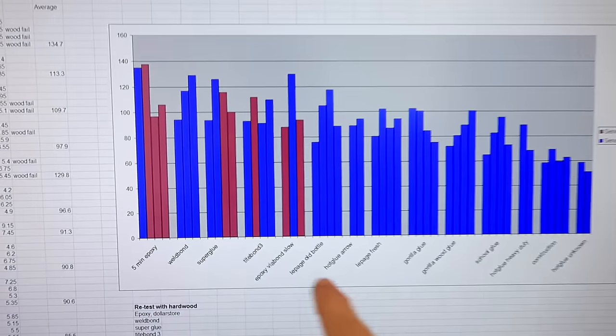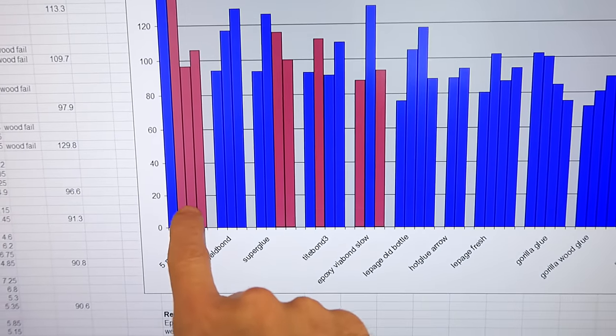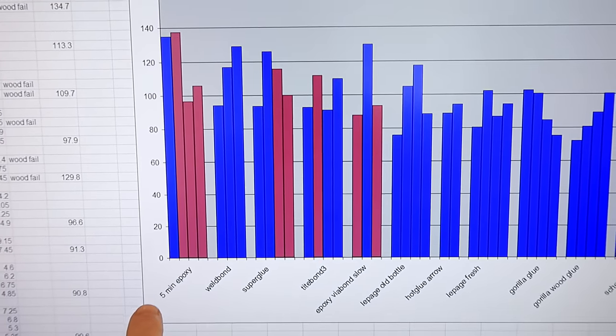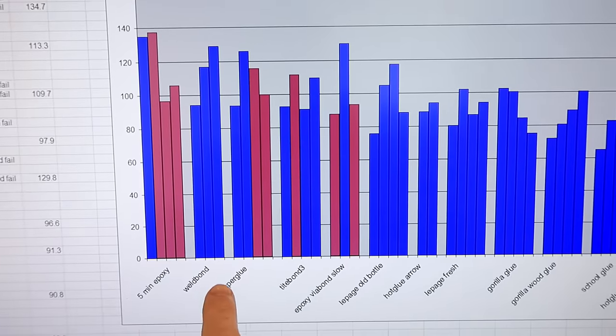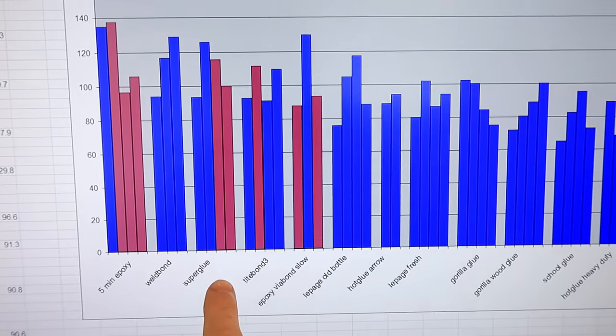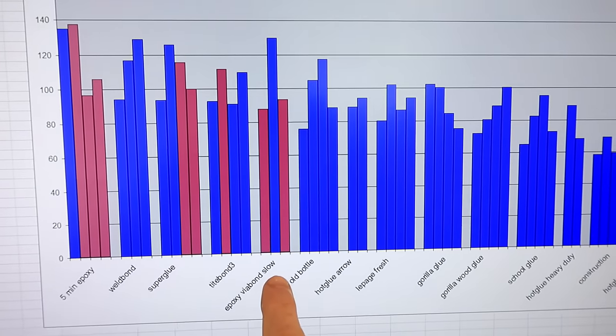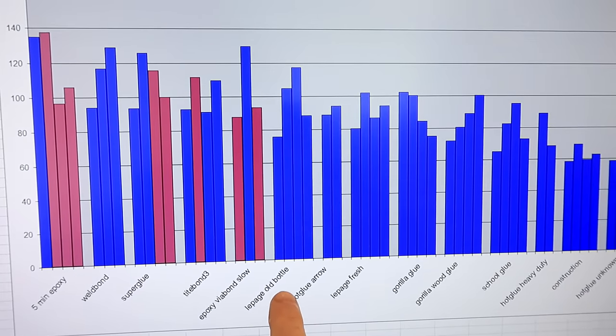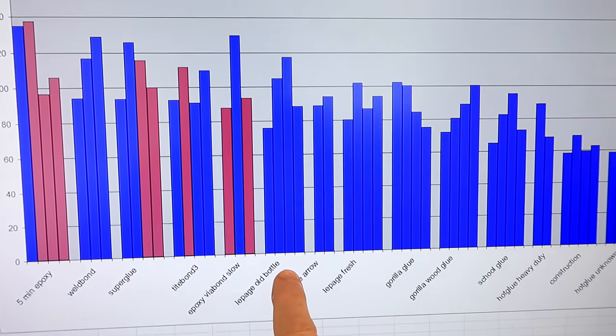And here's my results. Bars in red are where the wood mostly failed. Highest filler strength was the five-minute epoxy, followed by Weld Bond, Super Glue, Tight Bond 3, Via Bond Epoxy, that's a slow-setting one, an old bottle of LePage.